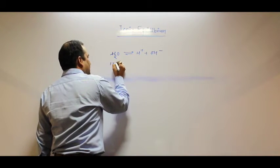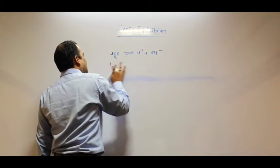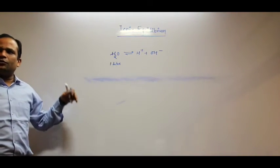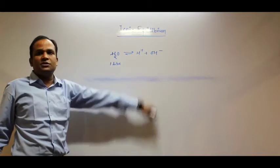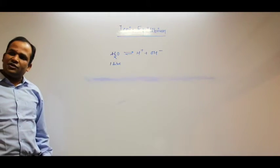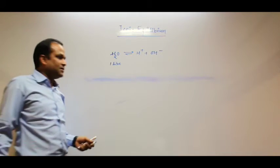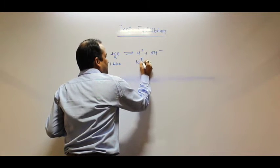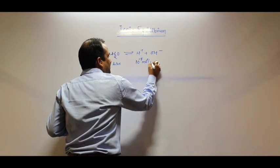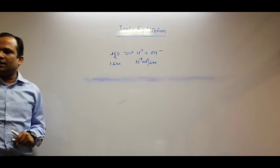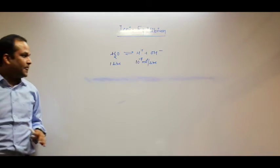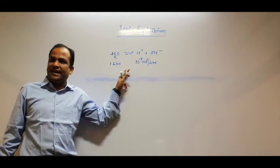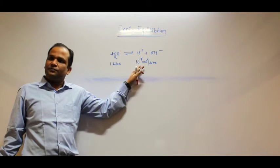Suppose it is 1 mole in 1 liter. The water I have collected is 1 liter. If 1 liter of water undergoes dissociation, the amount of H+ present per mole which is dissociated is 10 raise to the power minus 7 moles per liter. So both H+ and OH- are 10 raise to the power minus 7. At equilibrium, the remaining water is 1 minus x.